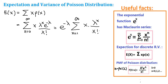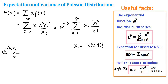Now we're going to expand x factorial a little bit in order to cancel out x. We know that x factorial can be expanded as x times (x minus 1) factorial — one step of expansion is enough. So we have e to the negative lambda times the summation from x equals 1 to infinity of x times lambda to the x over x times (x minus 1) factorial.